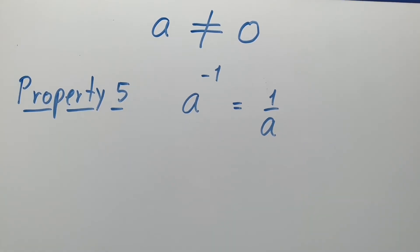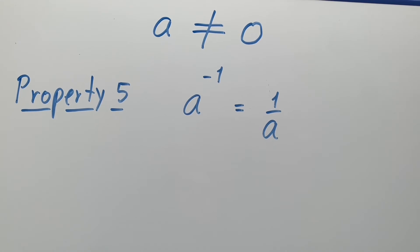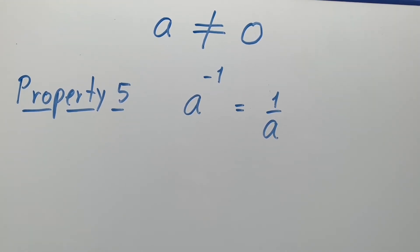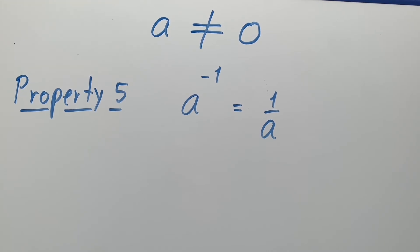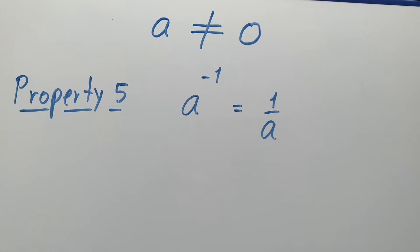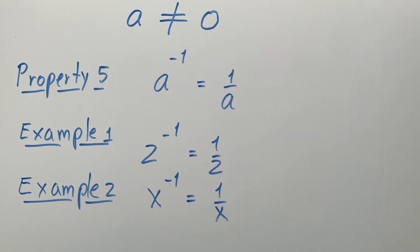Property 5: a to the minus 1 power is the reciprocal of a. In other words, a to the minus 1 power means invert a.